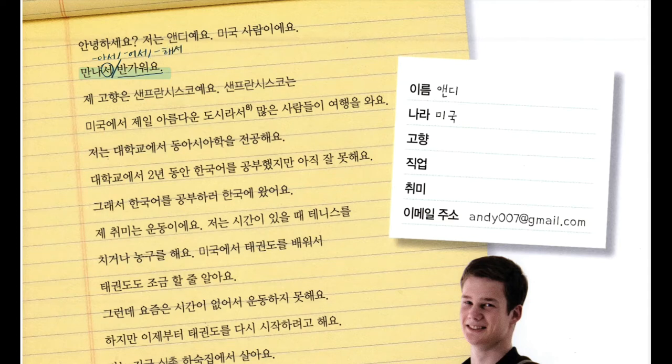제 고향은 샌프란시스코예요. 고향 뭐예요? 고향 means 'hometown,' isn't it? So my hometown is 샌프란시스코.